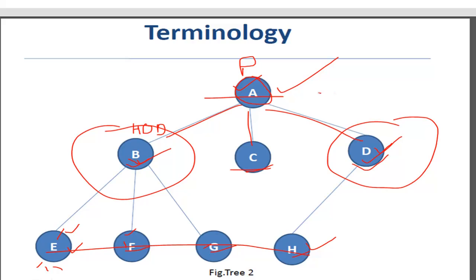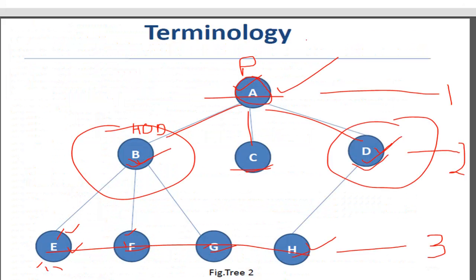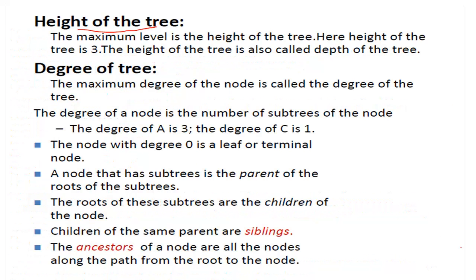There is also the concept of levels of a tree. The root is considered at level one. The subsequent or adjacent children are at level two, and so on — next nodes are at level three. Then there is height of the tree: the maximum level is the height of the tree. The maximum level here is three, so the height of the tree is three. Height and depth are the same.